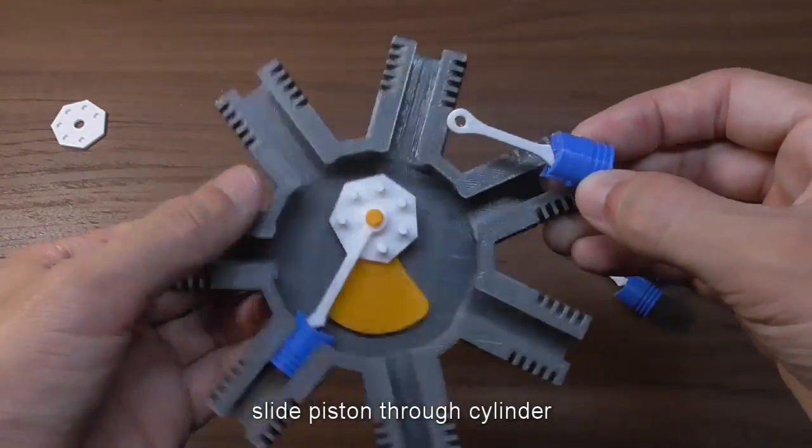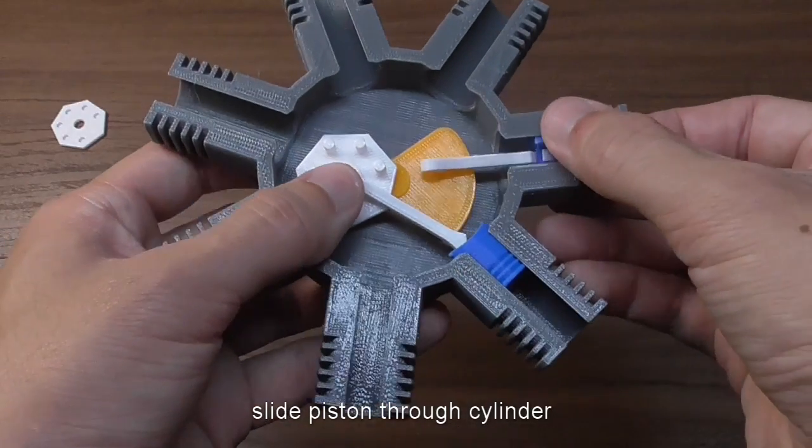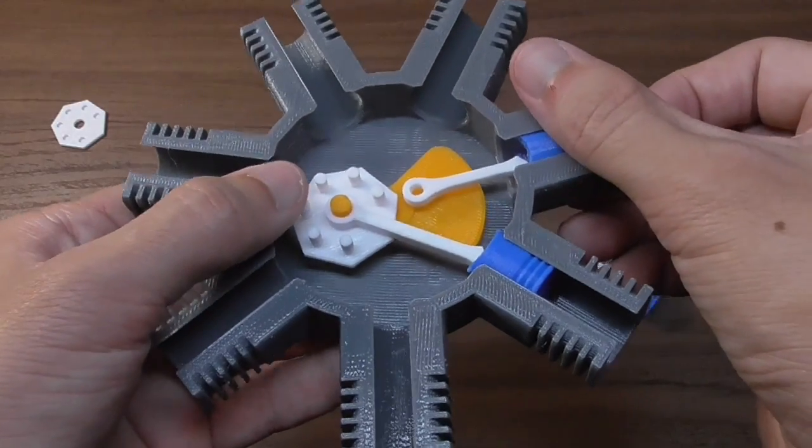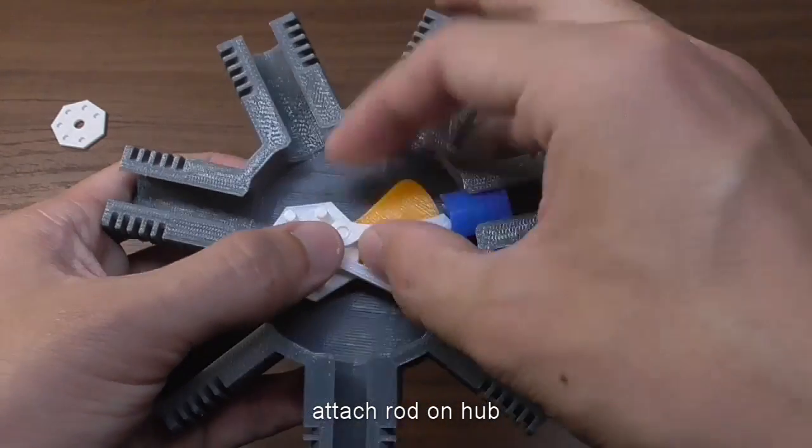Slide the piston through the cylinder and attach the rod onto the hub. Make sure that you don't connect the rod onto the wrong pin.